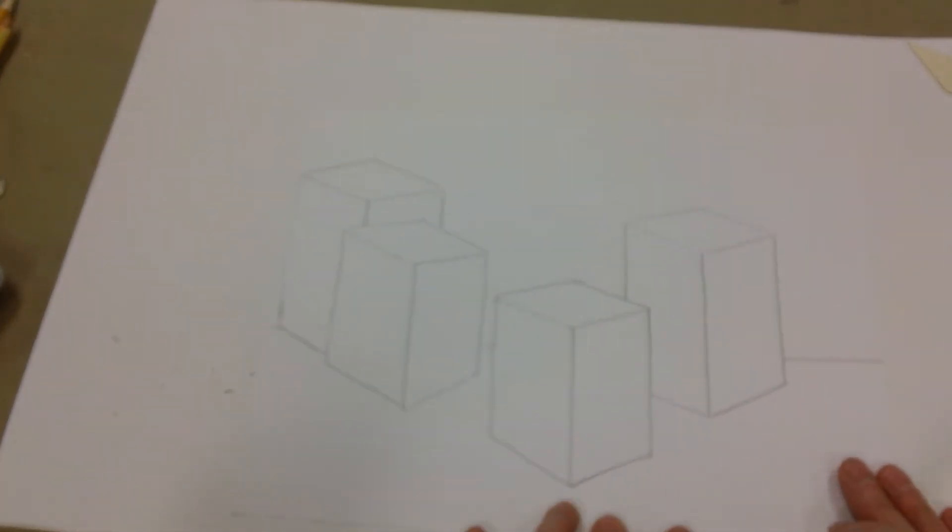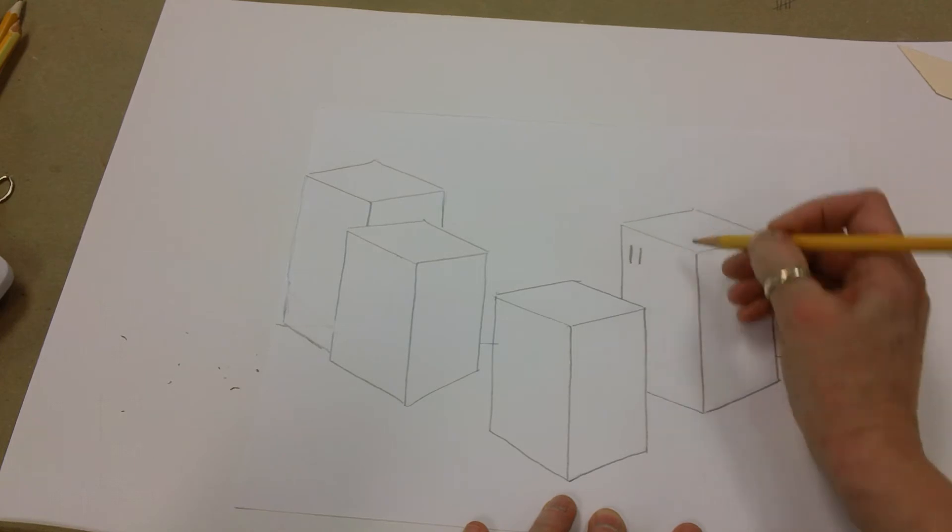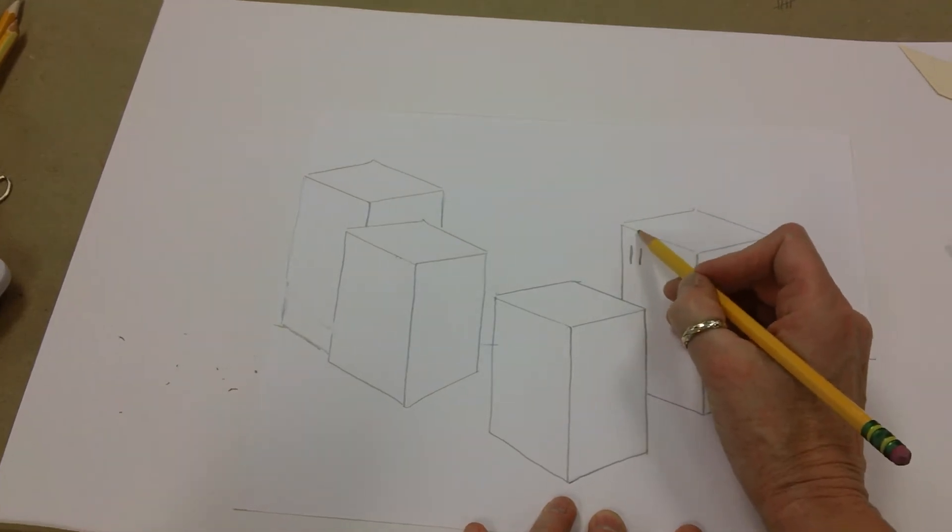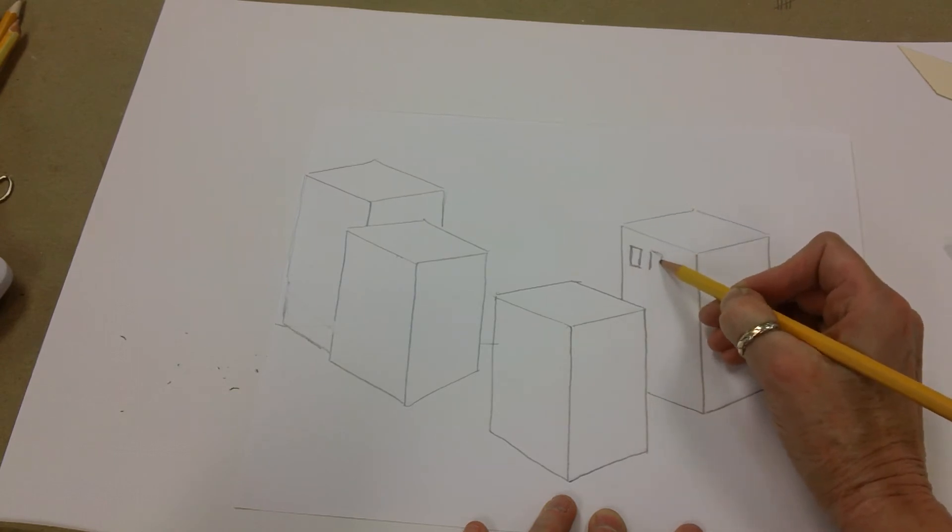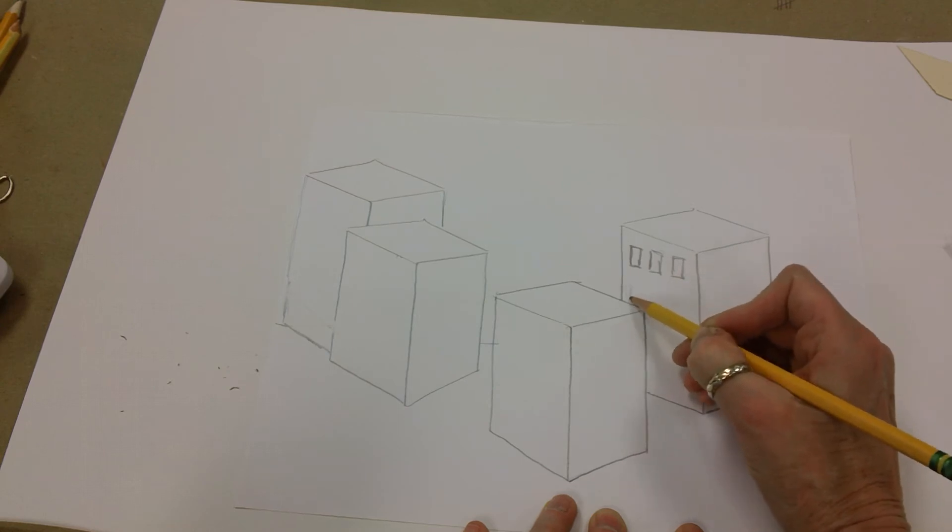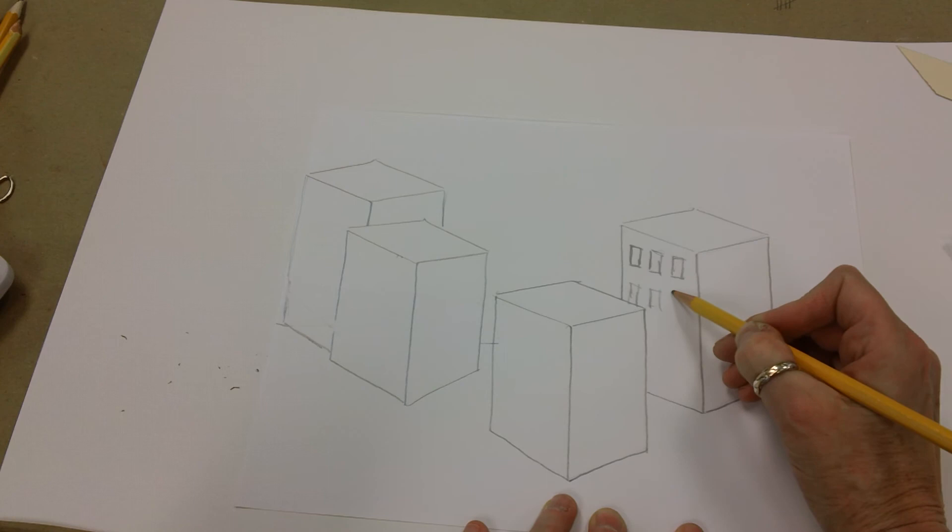Now once I have some buildings here, I can begin to add windows. So making little lines and then the top line has to be parallel here. And just how you think a building would look like in the city. Make some windows here. You kind of get the idea, right?